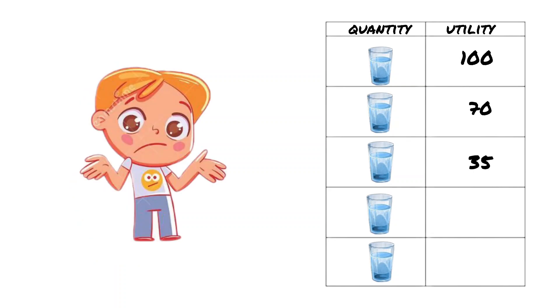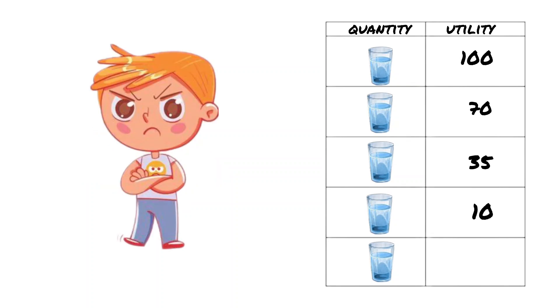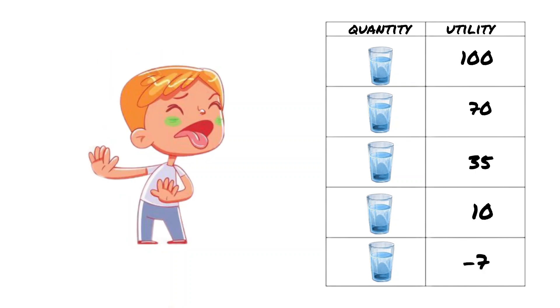We will already want to drink the third glass with less desire. The fourth one, we will not want to drink, and the indicator will approach zero. And from the fifth one, we will feel bad at all, and the usefulness will become negative.